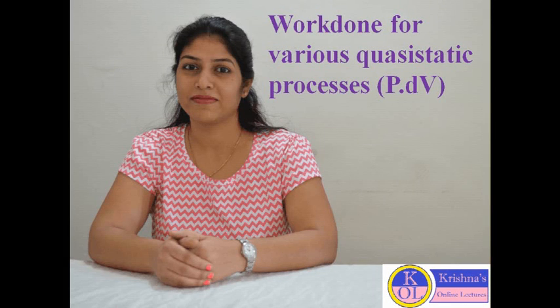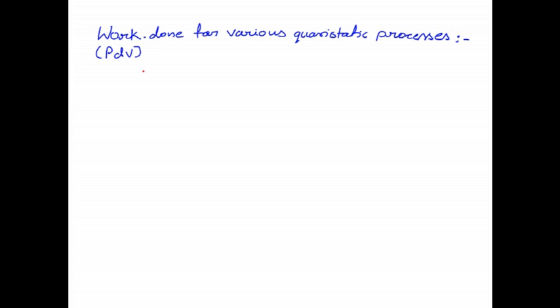Hello students. Our today's topic is work done for various quasi-static processes. So let's start the topic — work done for various quasi-static processes, PDV work. In this category, the first type of process is the constant pressure process.